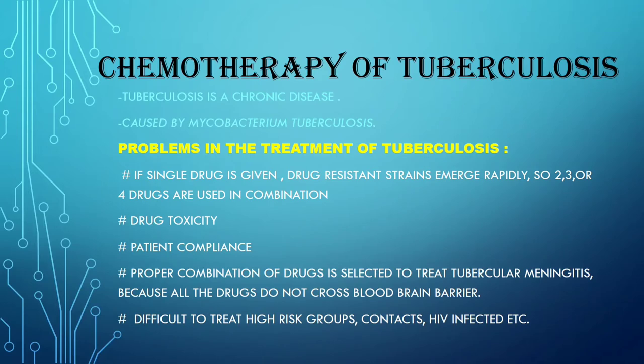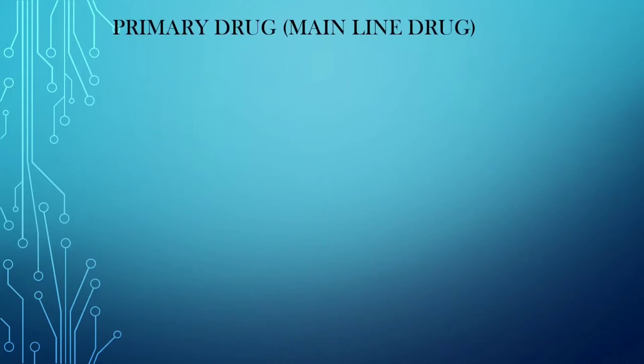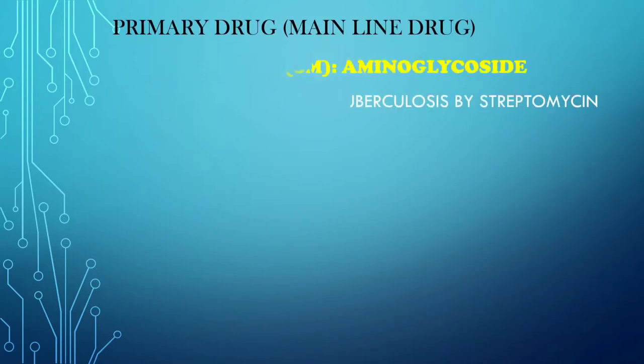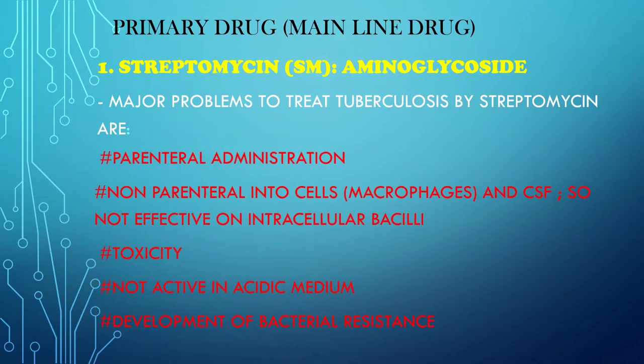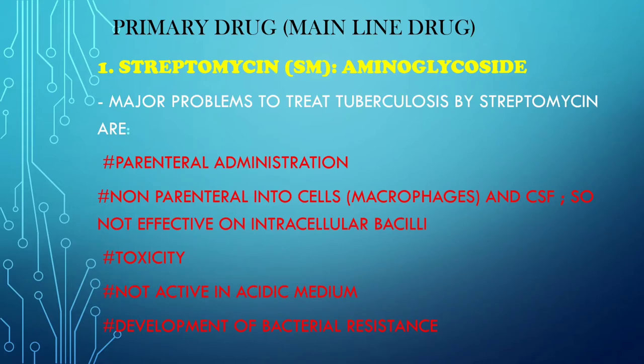Because not all drugs cross the blood-brain barrier. Now it is also difficult to treat high-risk groups — it is very difficult to treat people who are HIV infected. The primary drug or main line drug we are going to talk about here is Streptomycin. The major problems in treating tuberculosis with Streptomycin are: first, parenteral administration; then toxicity is always a problem; and this drug is not active in acidic medium.